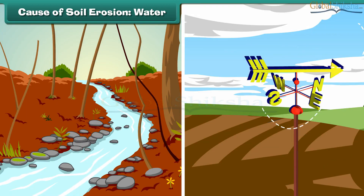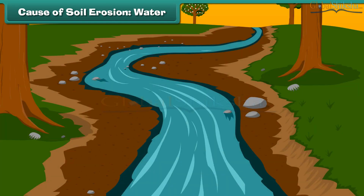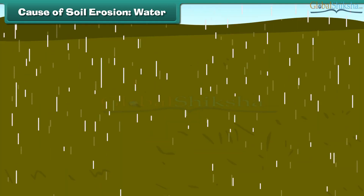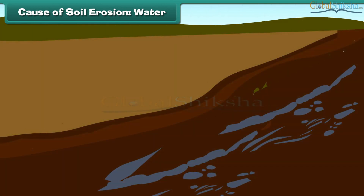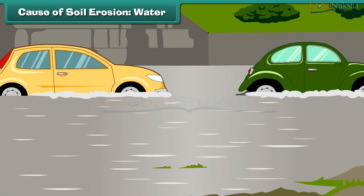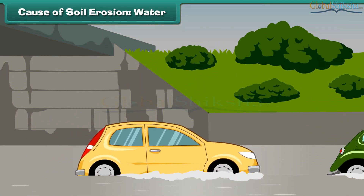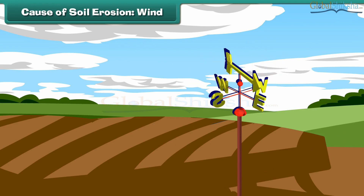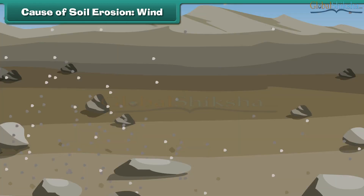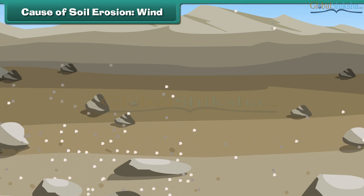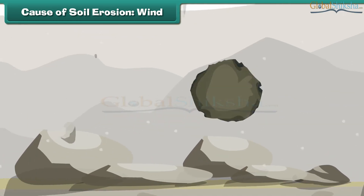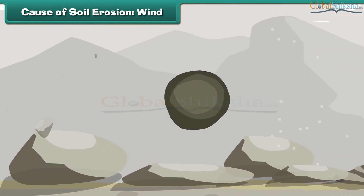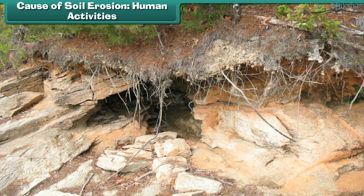The most common factors causing soil erosion are water and wind movements. Water flowing through the ground carries away soil with it. During rain, the soil particles are detached by raindrops and carried away by running water. Floods are also a main cause of soil erosion. Wind picks up finer soil particles and takes them to other locations. During storms, heavy wind takes away bigger soil particles to a distant place, causing soil erosion.